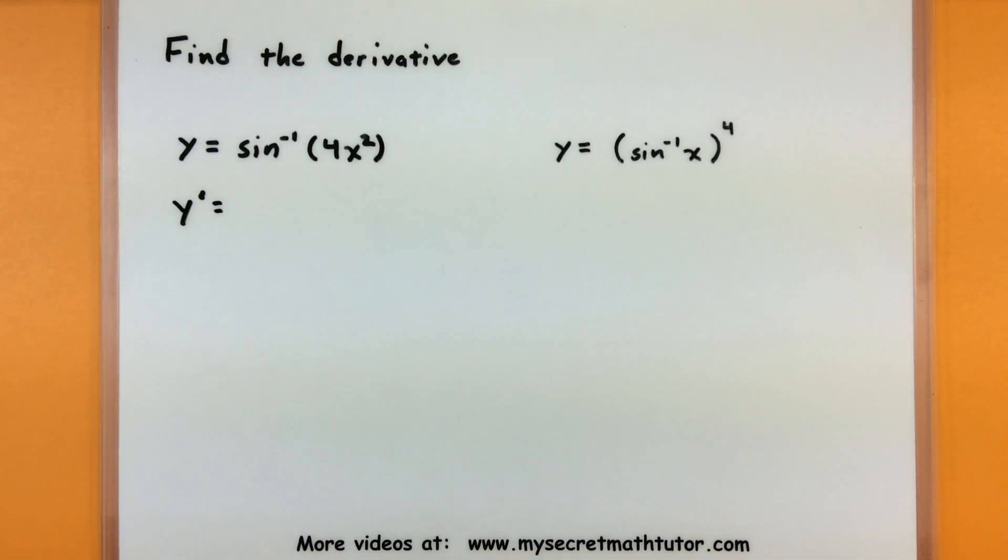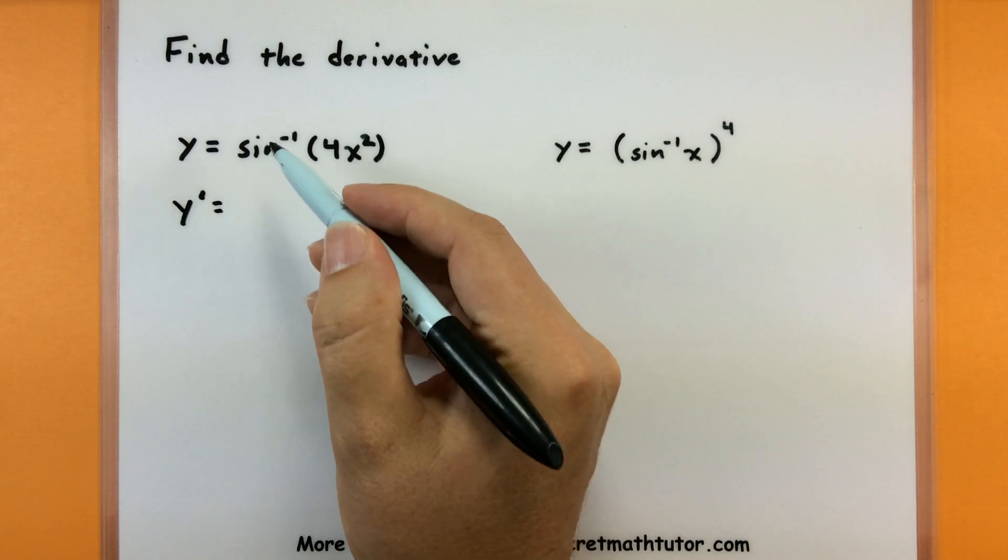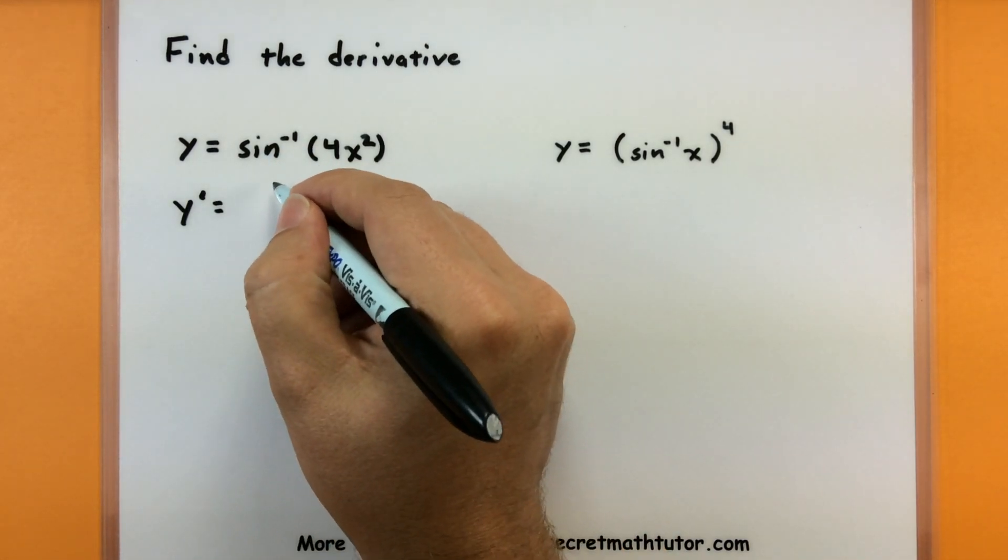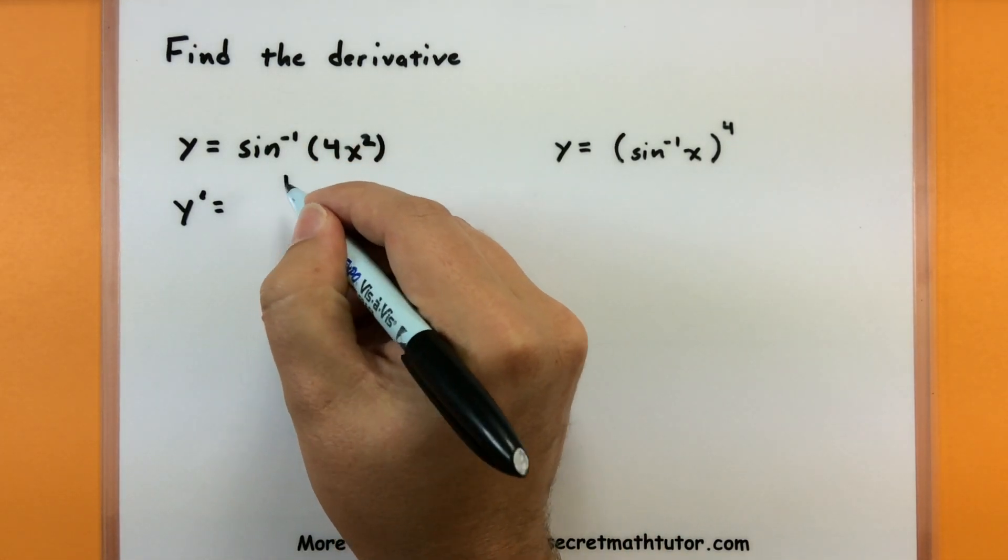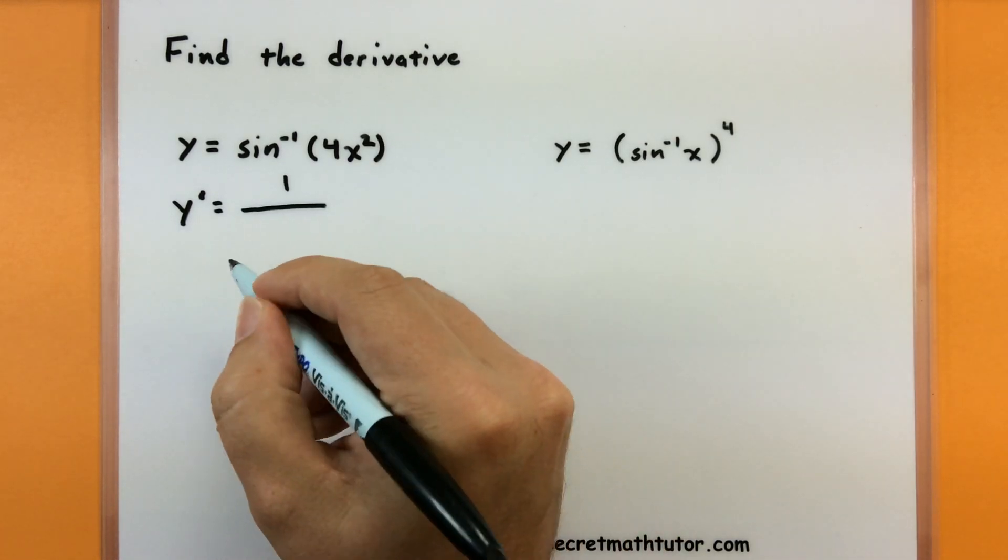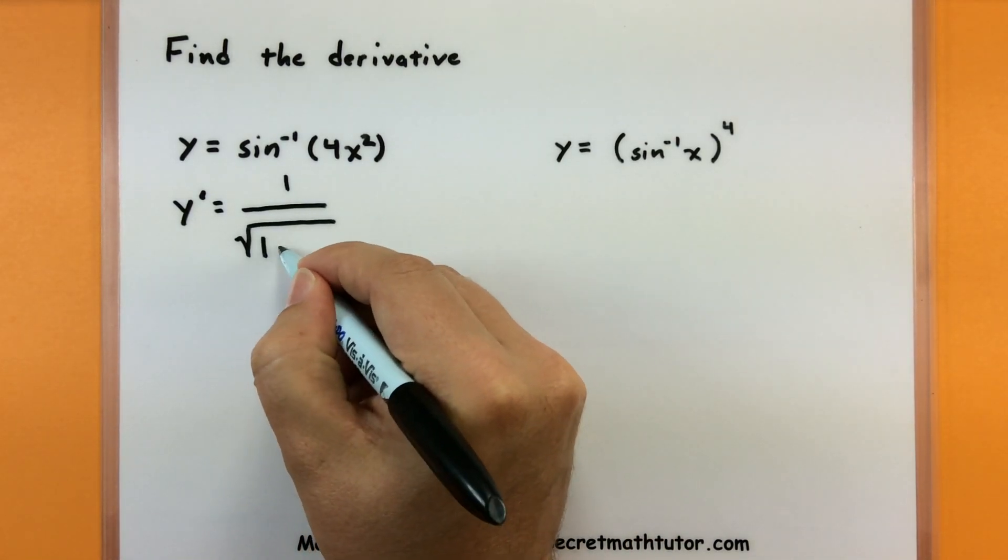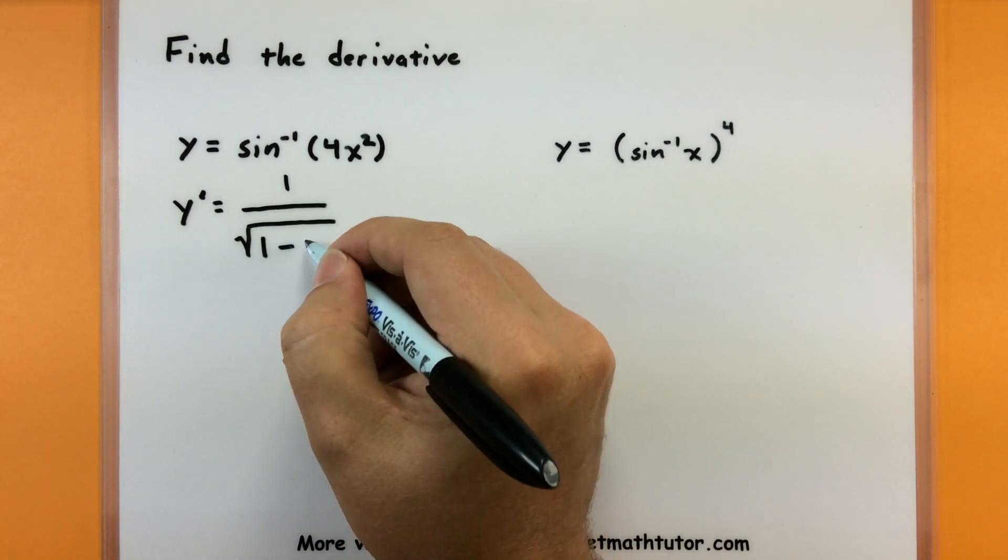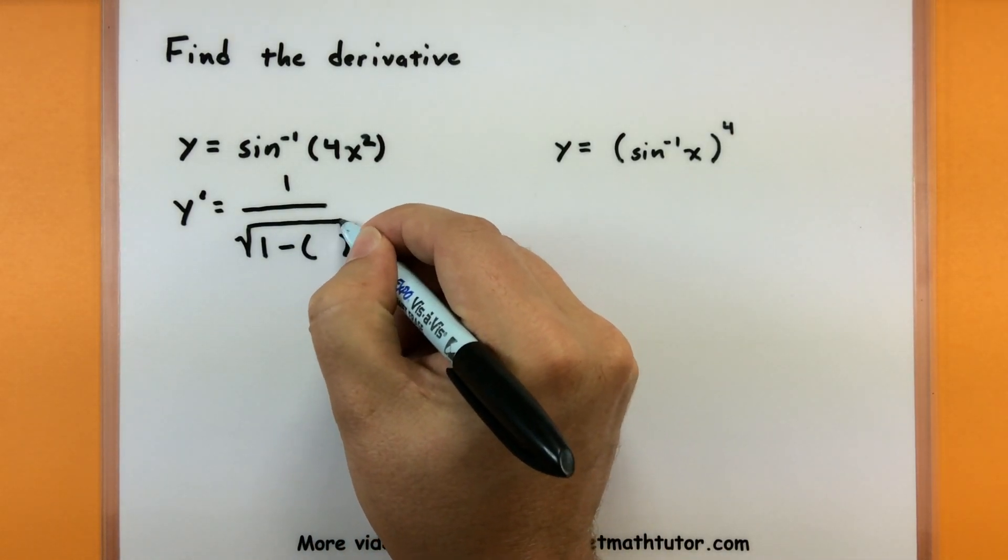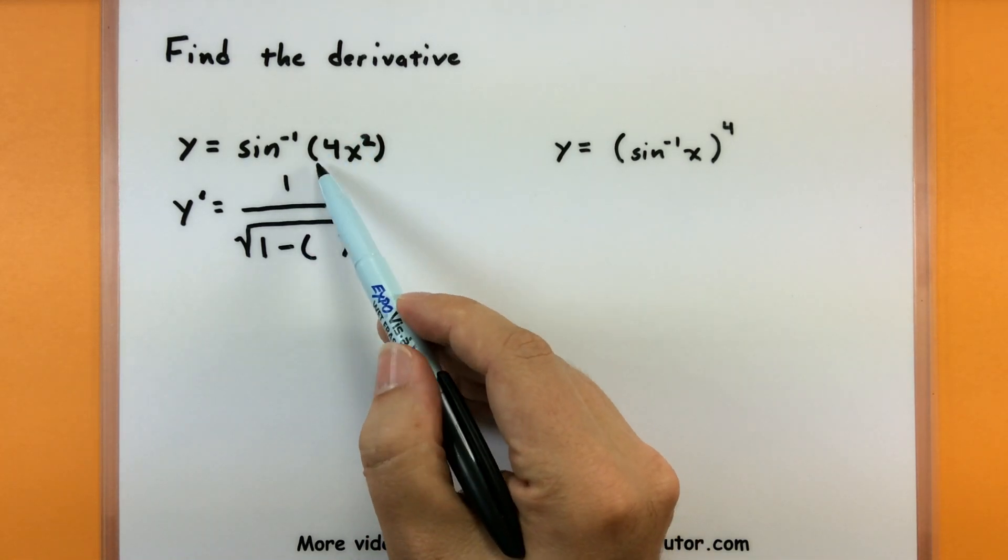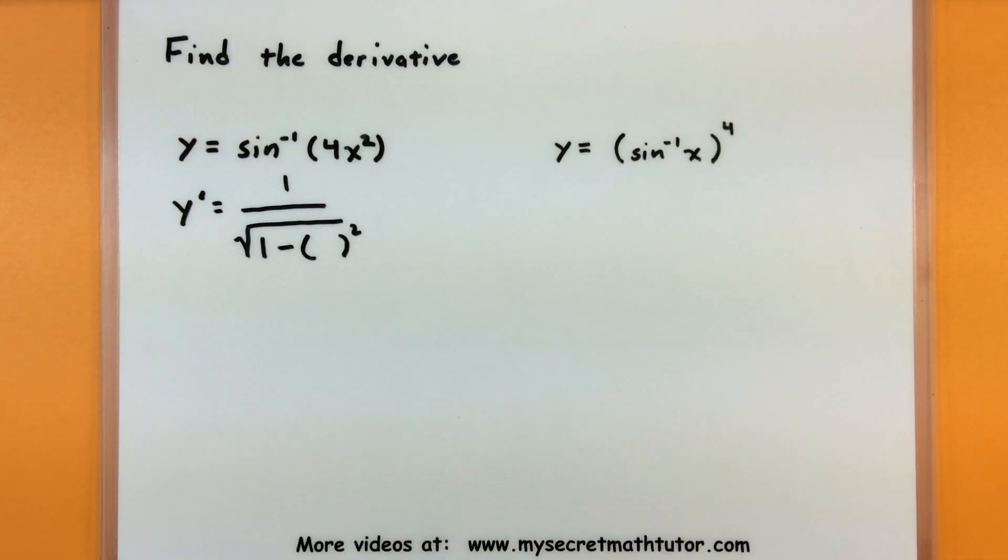So we want to take the derivative of inverse sine, and on the inside looks like we have a 4x squared. Since these are a little bit more complicated, what I like to do when finding their derivatives is kind of start off with a template of what the derivative of inverse sine would look like. So the derivative for the outside is 1 divided by, then we have that square root.